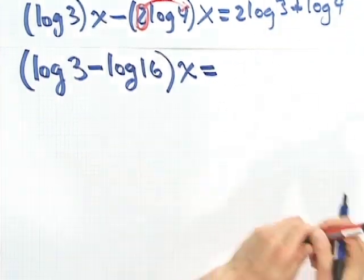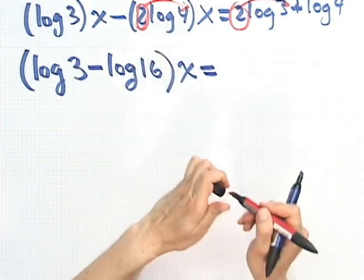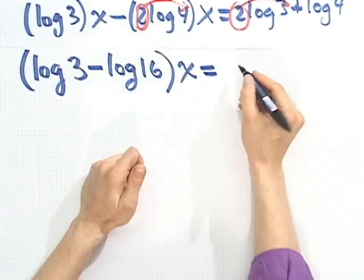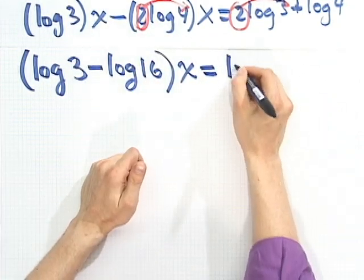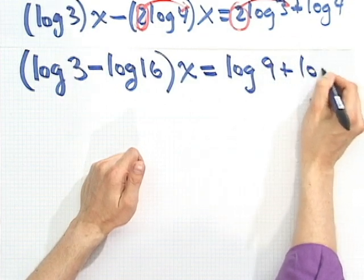Now watch this big step I'm going to do right here. The big step I'm going to do right here is first of all take this 2 and pull it up on top so it becomes a log 3 squared, which is log 9. And then I have a plus log 4.